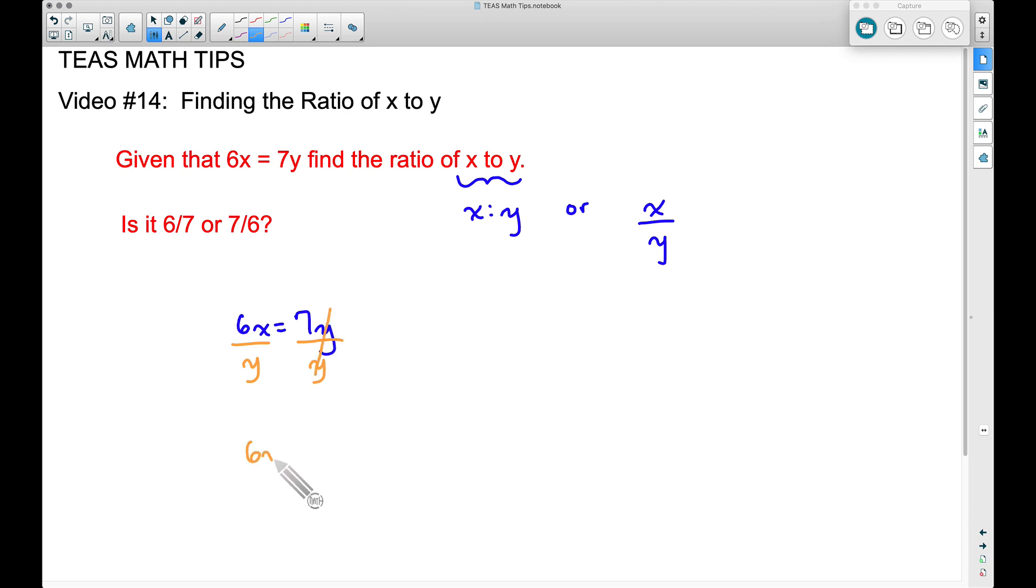Therefore, we now have 6x over y equals 7. Notice this is starting to look like what we want. We have a 6 here, but we don't want that 6 on the left-hand side. We want it on the right-hand side.